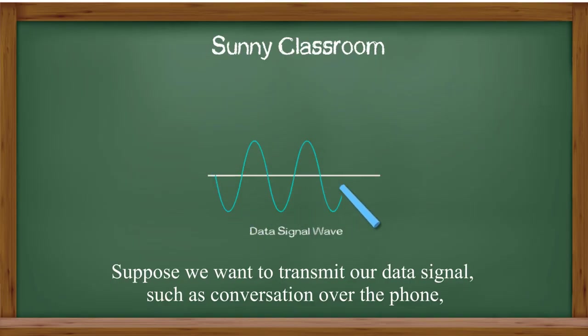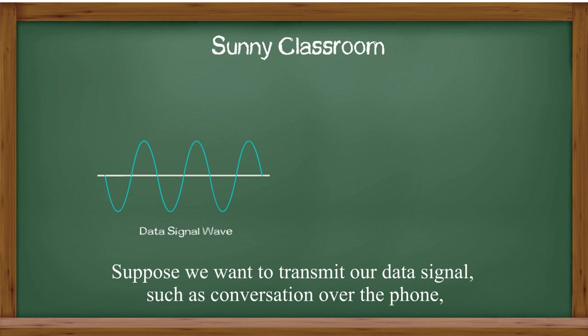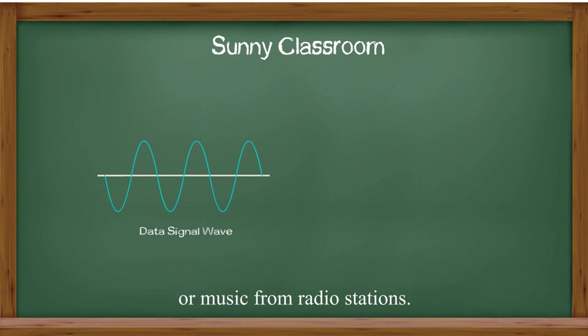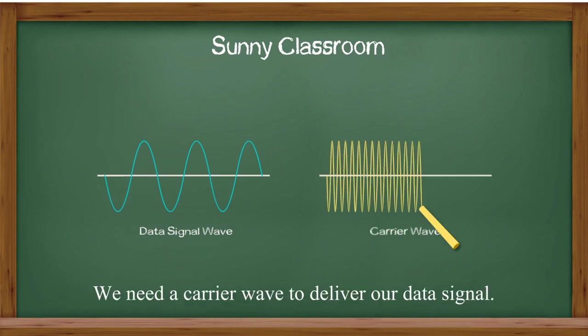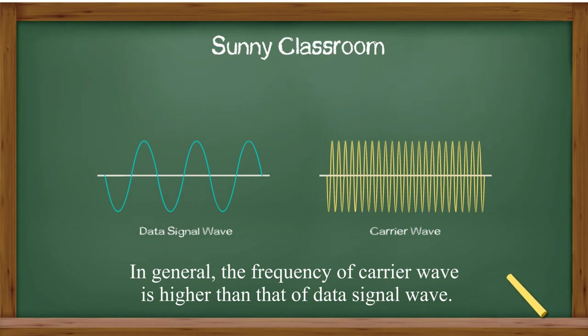Suppose we want to transmit our data signal, such as a conversation over the phone or music from radio stations. We need a carrier wave to deliver our data signal. In general, the frequency of a carrier wave is higher than that of a data signal wave.